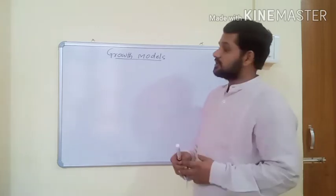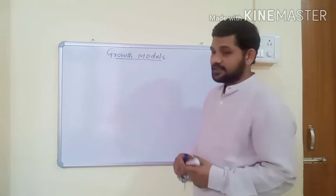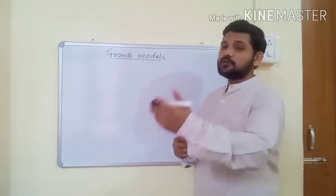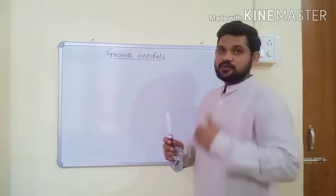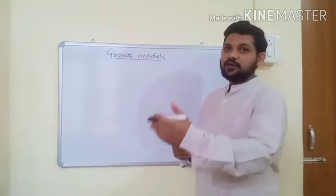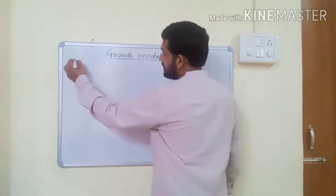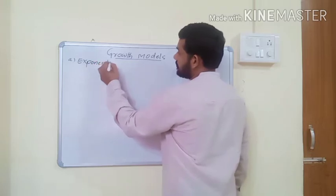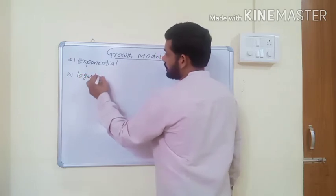We should be concerned about uncontrolled population because it creates a number of problems in our country. It is therefore essential to understand whether the population growth of other animals behaves the same way. That's why we should learn from nature how to control population. Growth models are usually of two types: exponential growth model and logistic growth model.